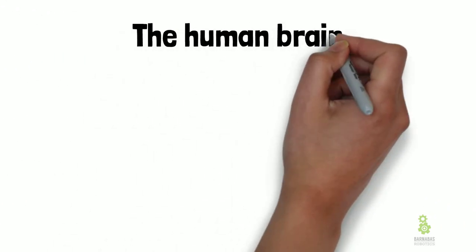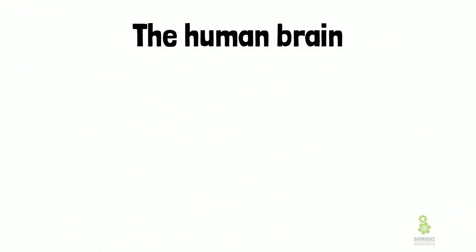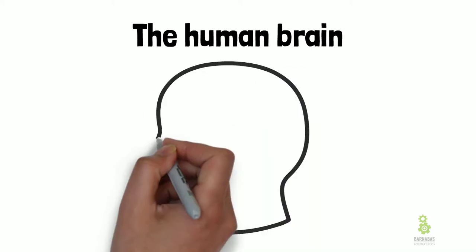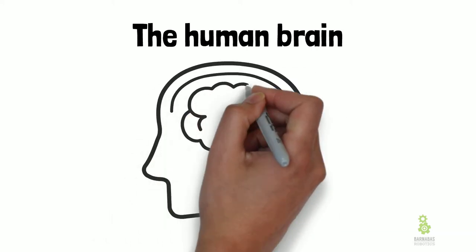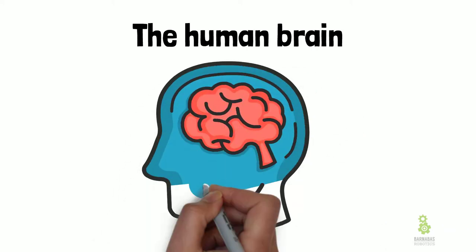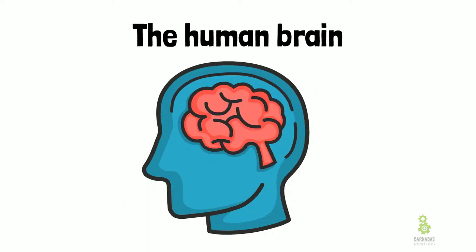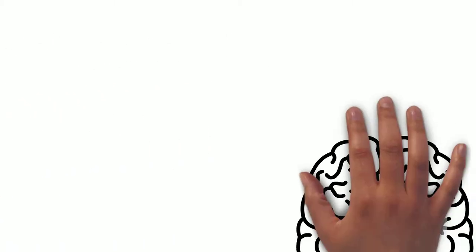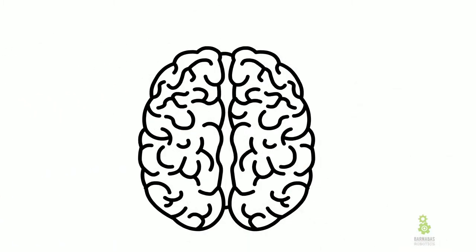As we get started, the first thing I want to talk about is the human brain. The human brain is inside our head — it's where we have thoughts and where we have memories. And it's actually pretty interesting: there are actually two sides to it.